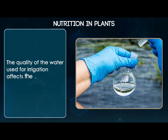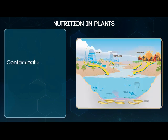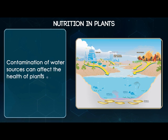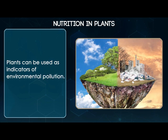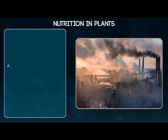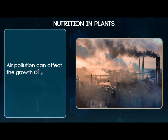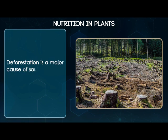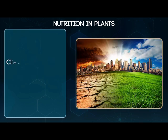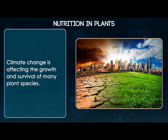The quality of the water used for irrigation affects the growth of the plants. Contamination of water sources can affect the health of plants and humans. Plants can be used as indicators of environmental pollution. Air pollution can affect the growth of plants. Deforestation is a major cause of soil erosion and loss of biodiversity. Climate change is affecting the growth and survival of many plant species.